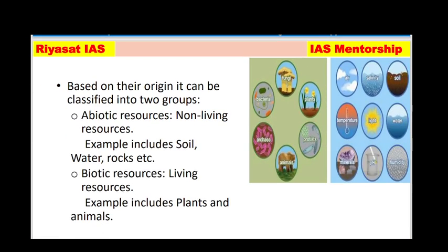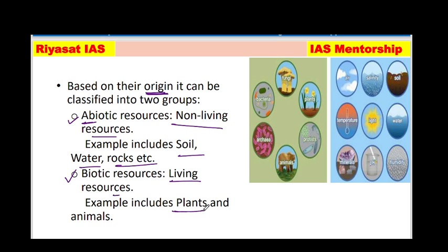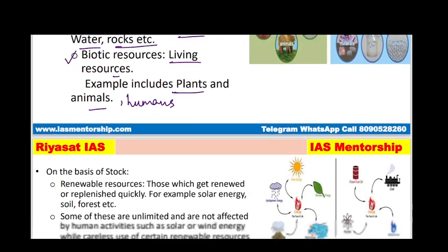Natural resources based on their origin are classified into two groups: Abiotic and Biotic. Abiotic resources are non-living — for example, soil, water, rocks. Biotic resources are living — they include plants, animals, and humans.